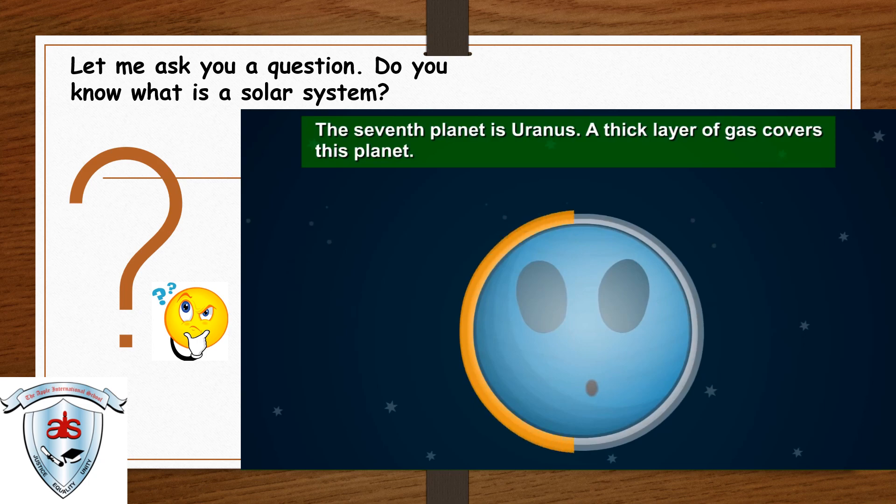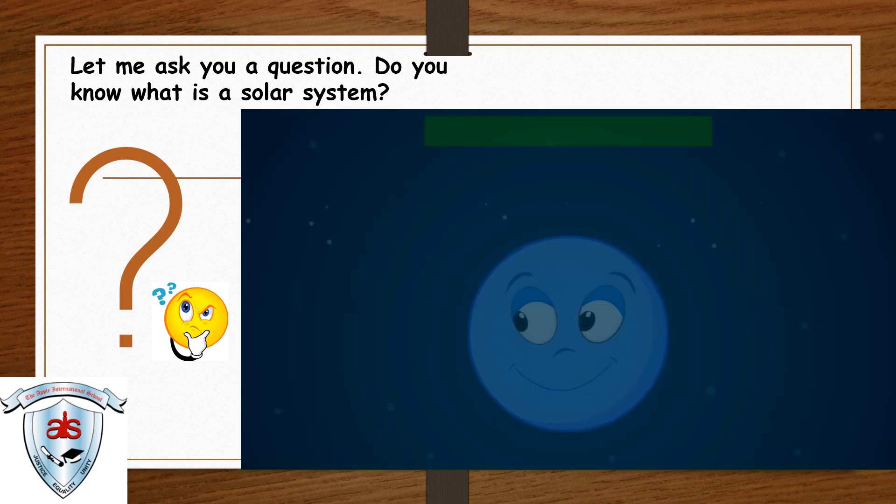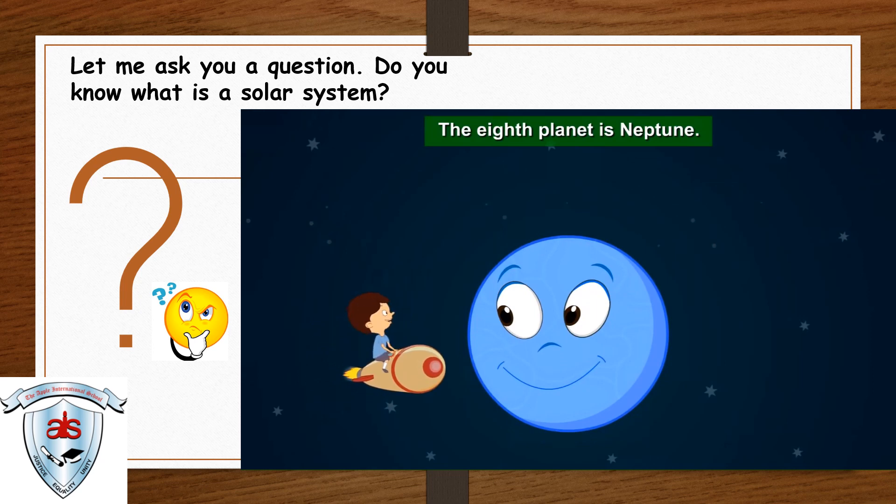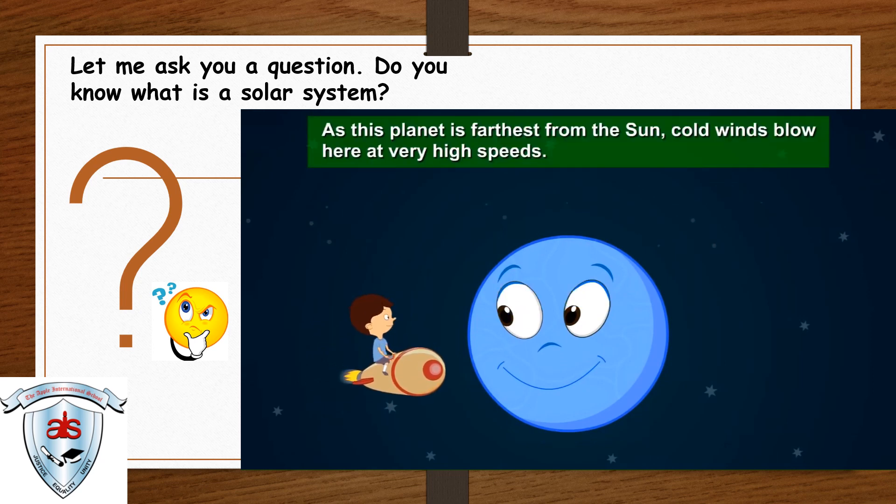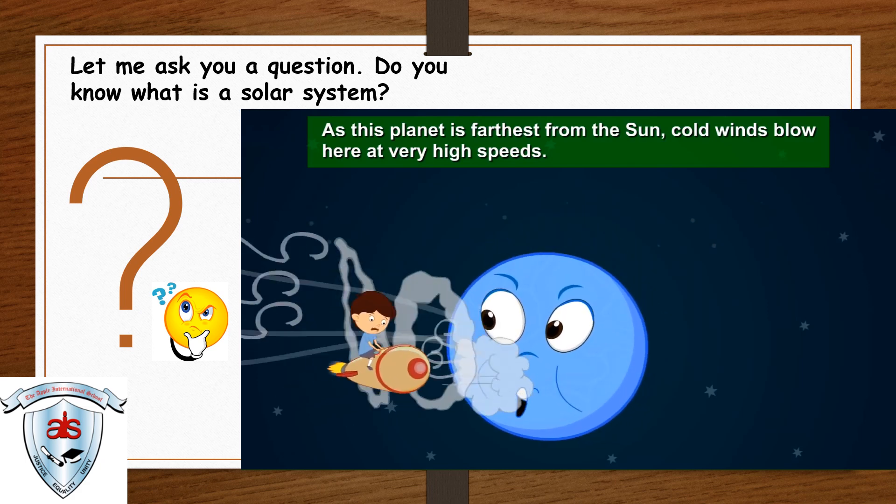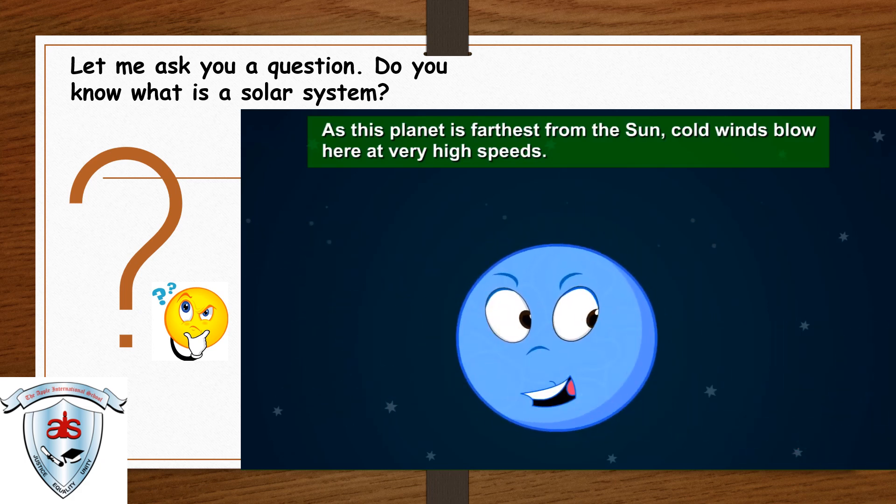The seventh planet is Uranus. A thick layer of gas covers this planet. The eighth planet is Neptune. As this planet is farthest from the sun, cold winds flow here at very high speeds.